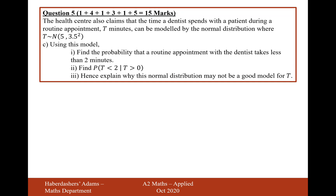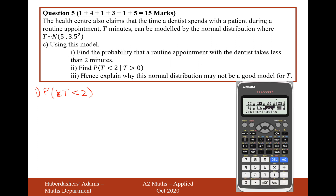Moving on to part C now. The health centre also claims that the time a dentist spends with a patient during a routine appointment, T minutes, can be modelled by a normal distribution where T is normally distributed with a mean of 5 and a standard deviation of 3.5. Using this model, find the probability that a routine appointment with a dentist takes less than 2 minutes. So it's a standard probability question — find P(T < 2). Go to your calculator, mode 7, mode 2 for normal CD, upper boundary of 2, and your answer there is 0.196.